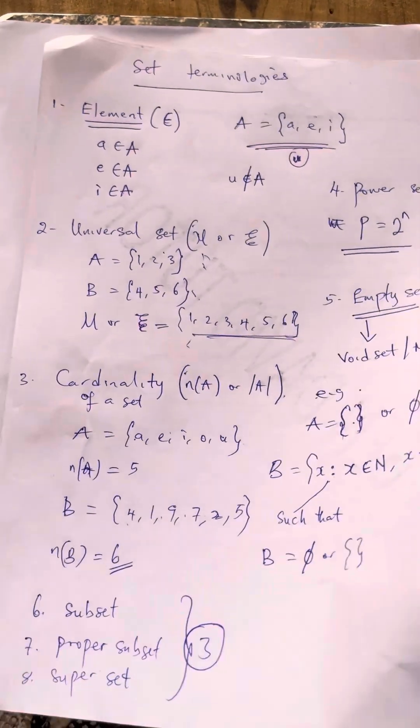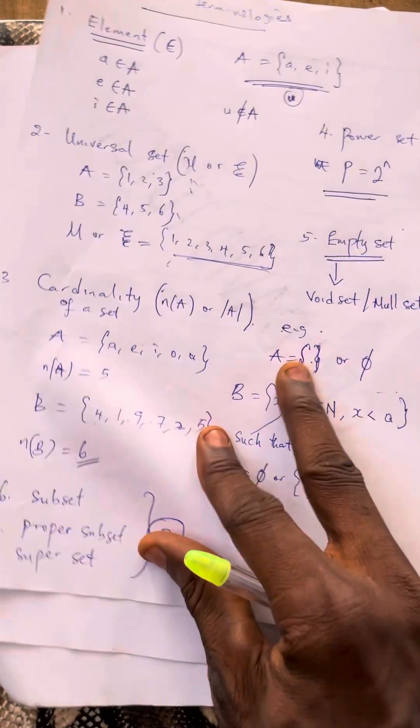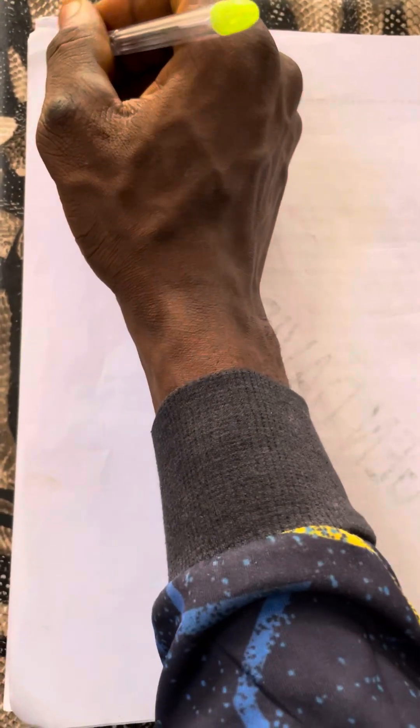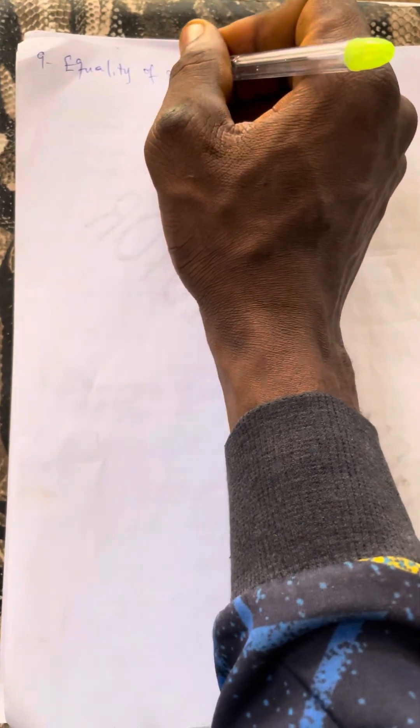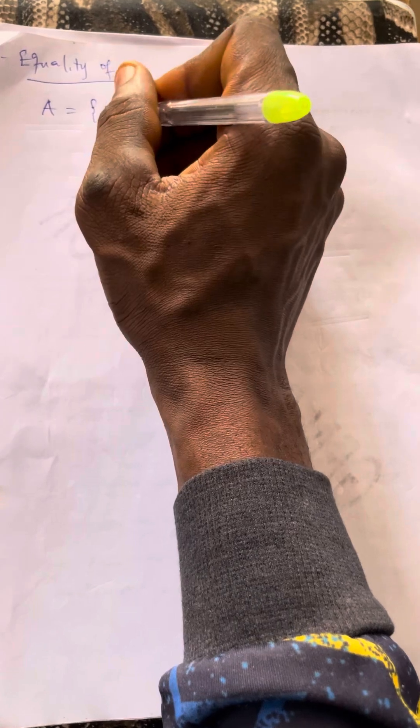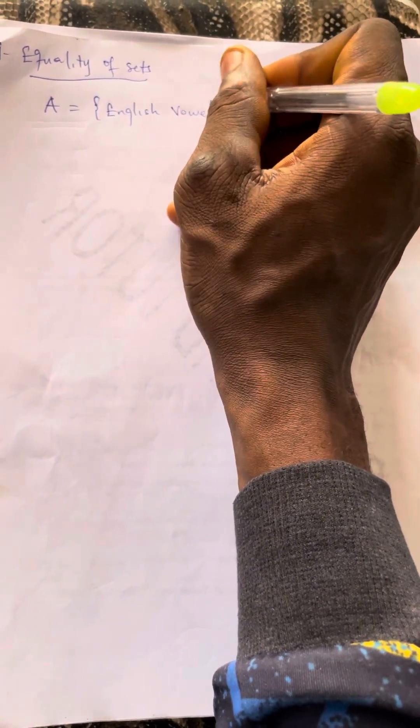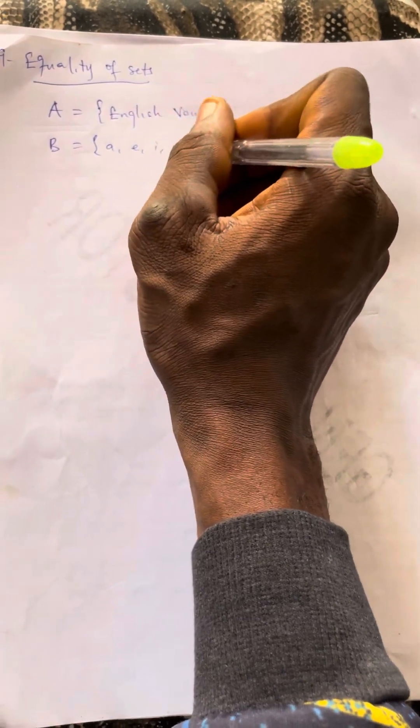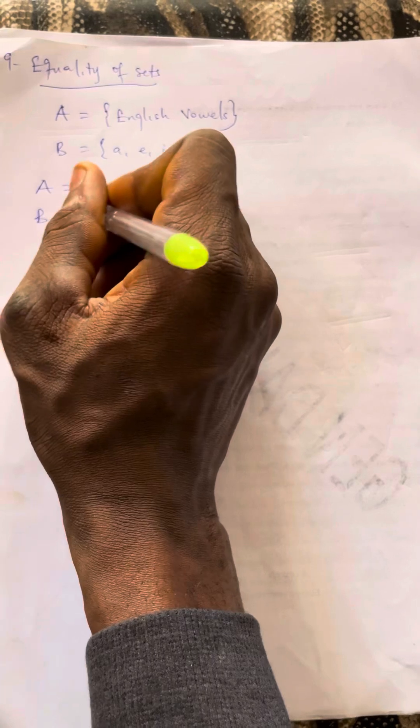Number nine is the equality of sets. Two sets are said to be equal if all the elements in A are present in B, and all the elements of B are present in A. For instance, if set A is the English vowels and set B is {A, E, I, O, U}, then we can say that A equals B, because all elements in one set are present in the other.